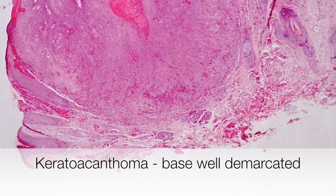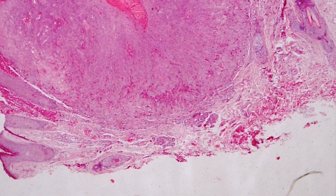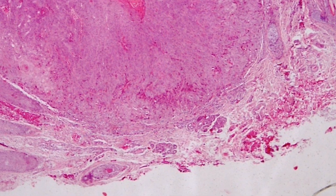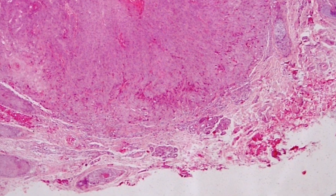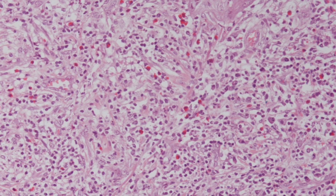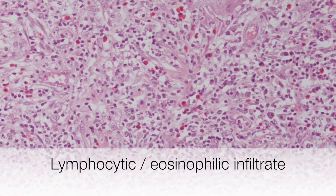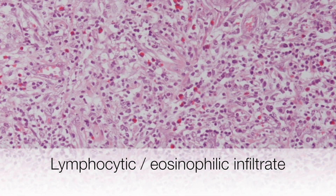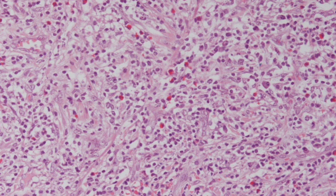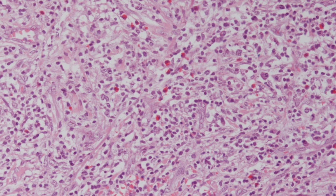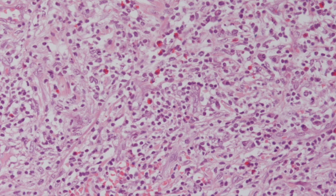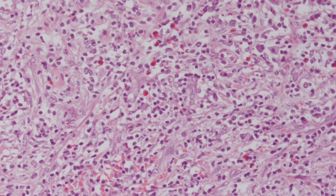This is the dermis at the base of a keratoacanthoma. It contains a dense infiltrate of lymphocytes and eosinophil polymorphs.